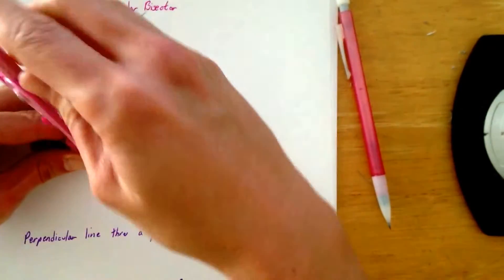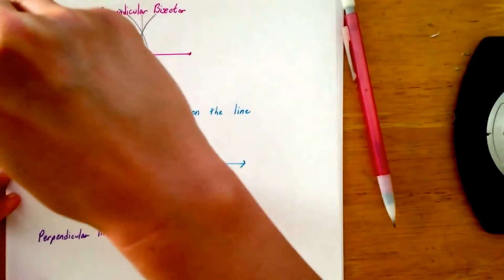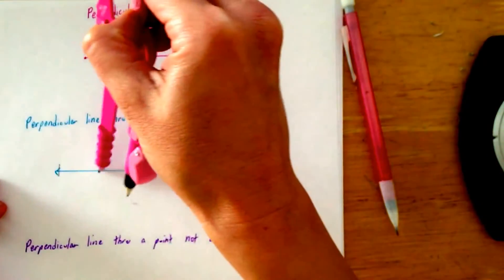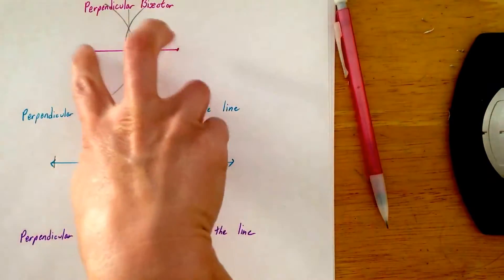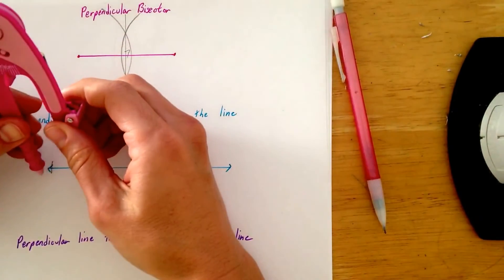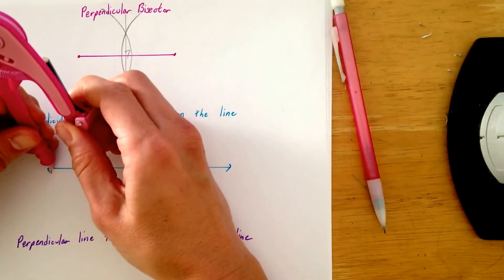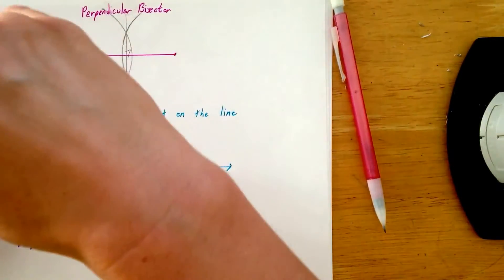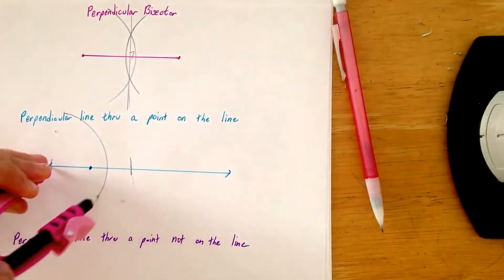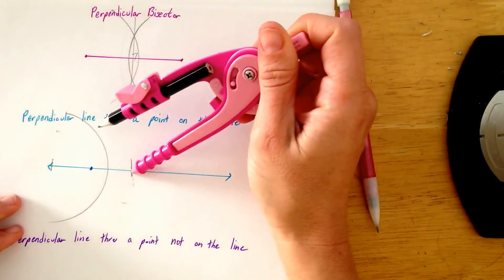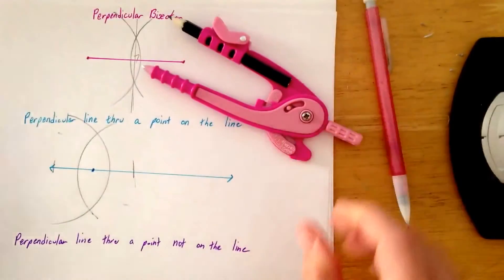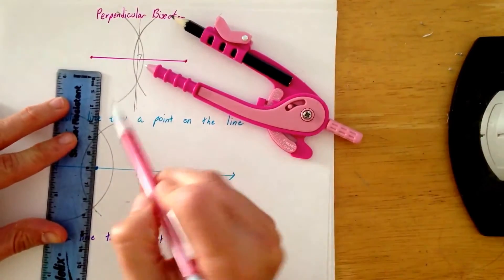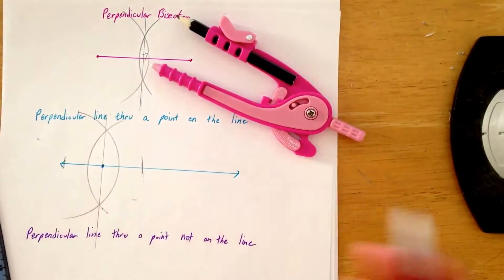Open up your compass to any length you like, draw an end point on one side, and an end point on the other side, and then do the same thing you were doing up there. Open up your compass to more than halfway, so open it up just a little bit more, and draw an arc from that end point, draw an arc from the other end point, connect the dots, and you're done.